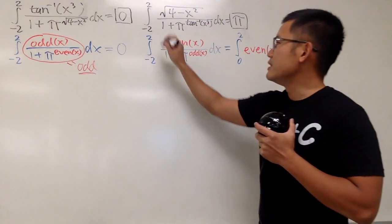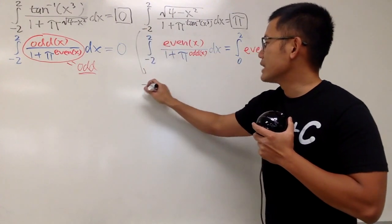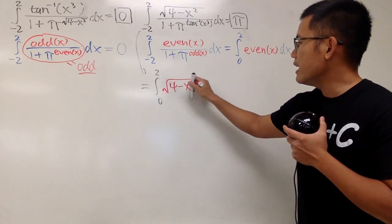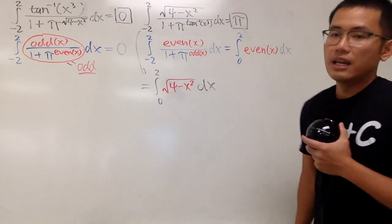And, of course, we just have to look back. As we can see, this right here, we just have to integrate from 0 to 2 of that square root of 4 minus x squared dx.